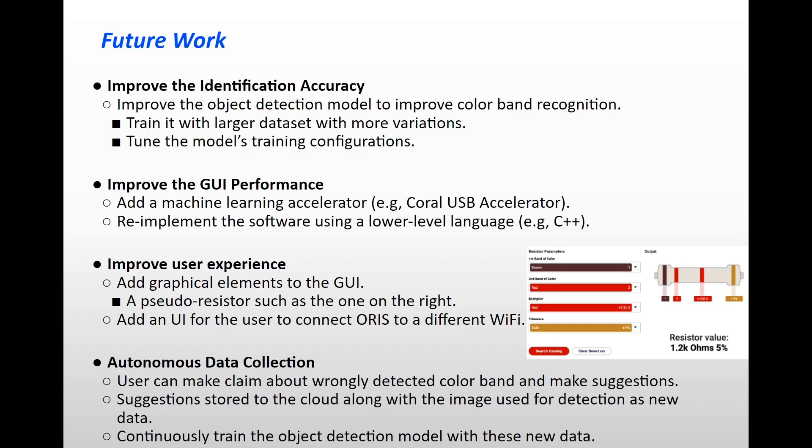Besides accuracy, we also need to improve the GUI performance. In order to meet a refresh rate of 5 frames per second on the GUI of the current ORIS, we can add a machine learning accelerator, such as Coral USB accelerator, so that the inferencing workload can be shifted from the processor on the RPi to the external accelerator. Another method is to reimplement the ORIS software in a low-level language such as C++ instead of Python to optimize the memory access overheads and fine-tune program characteristics to improve the responsiveness of the GUI.